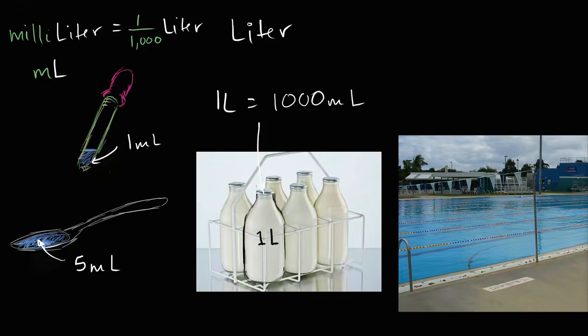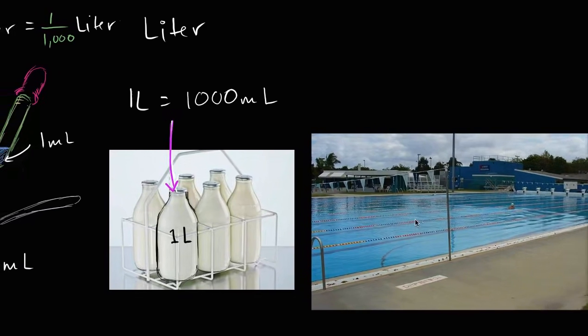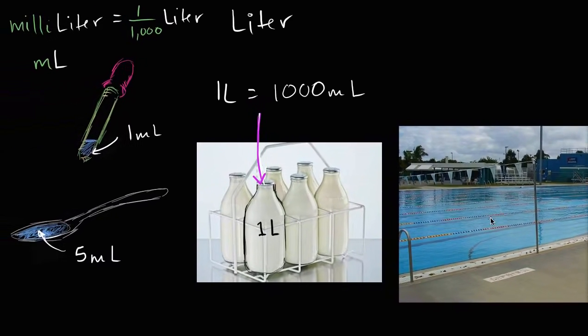Now, what if we go to things that are much larger than the scale of a jar of milk? Say, a swimming pool, and this right over here, this is a picture of an Olympic-sized swimming pool, which is, for the most part, the largest pools. Well, there are some larger pools at some fancy hotels and things, but they're very large pools.